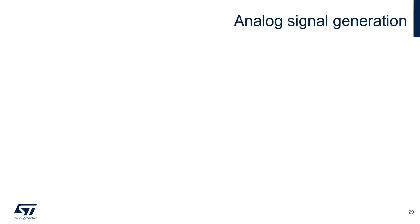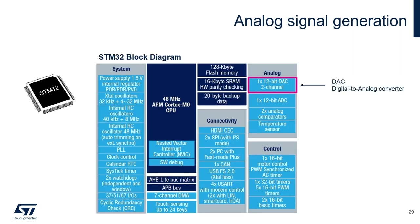All the data captured so far in the software demo look pretty static, because there are no dynamic signals by default on the EVAL board — they need to be brought by the user. So let's generate an analog signal that evolves a bit faster. We will use the STM32 microcontroller, which embeds a digital-to-analog converter on the Nucleo board, and use this analog block to generate a sine wave.